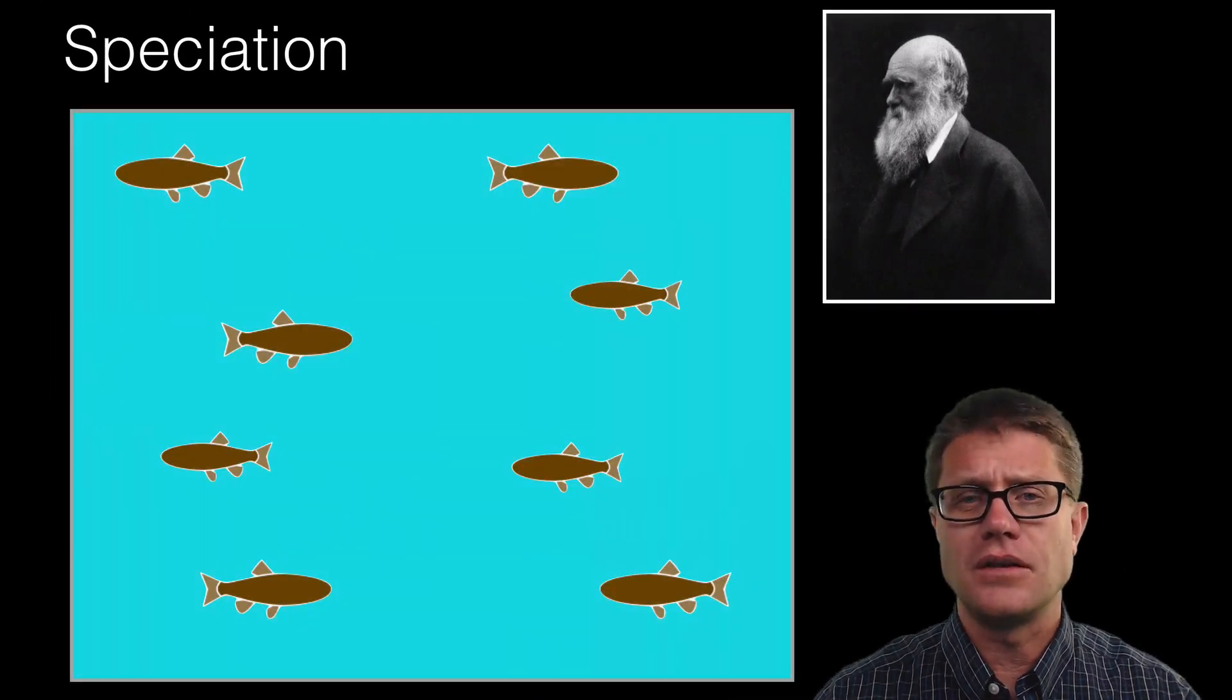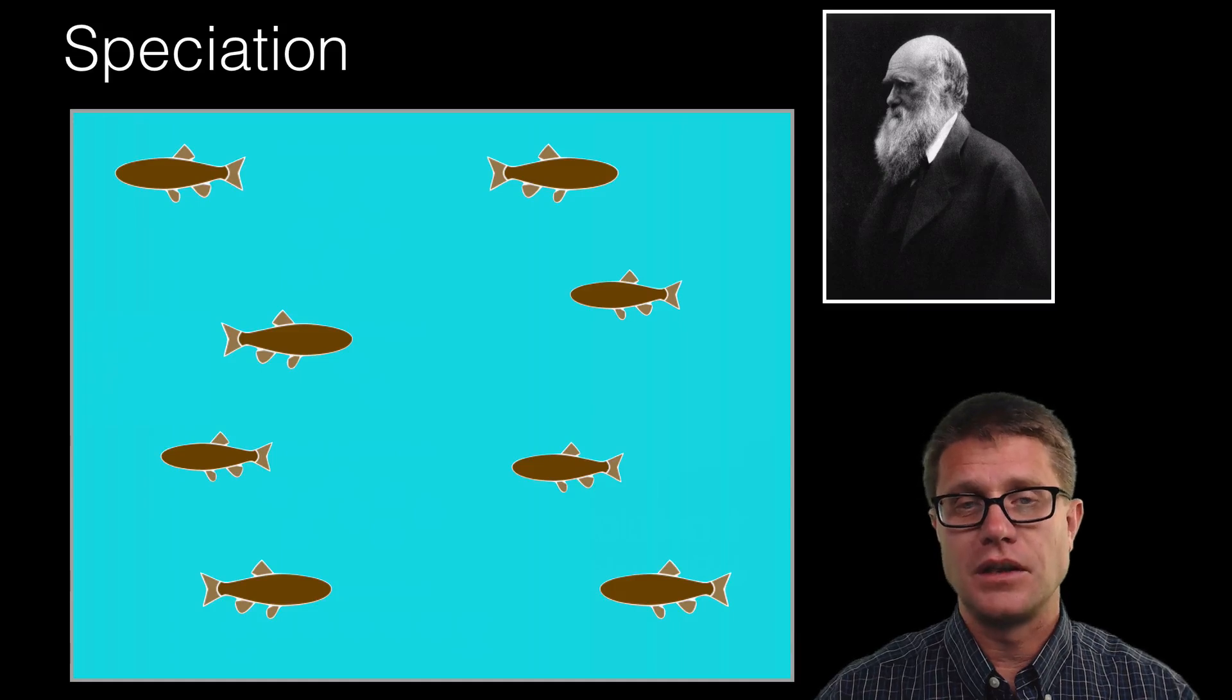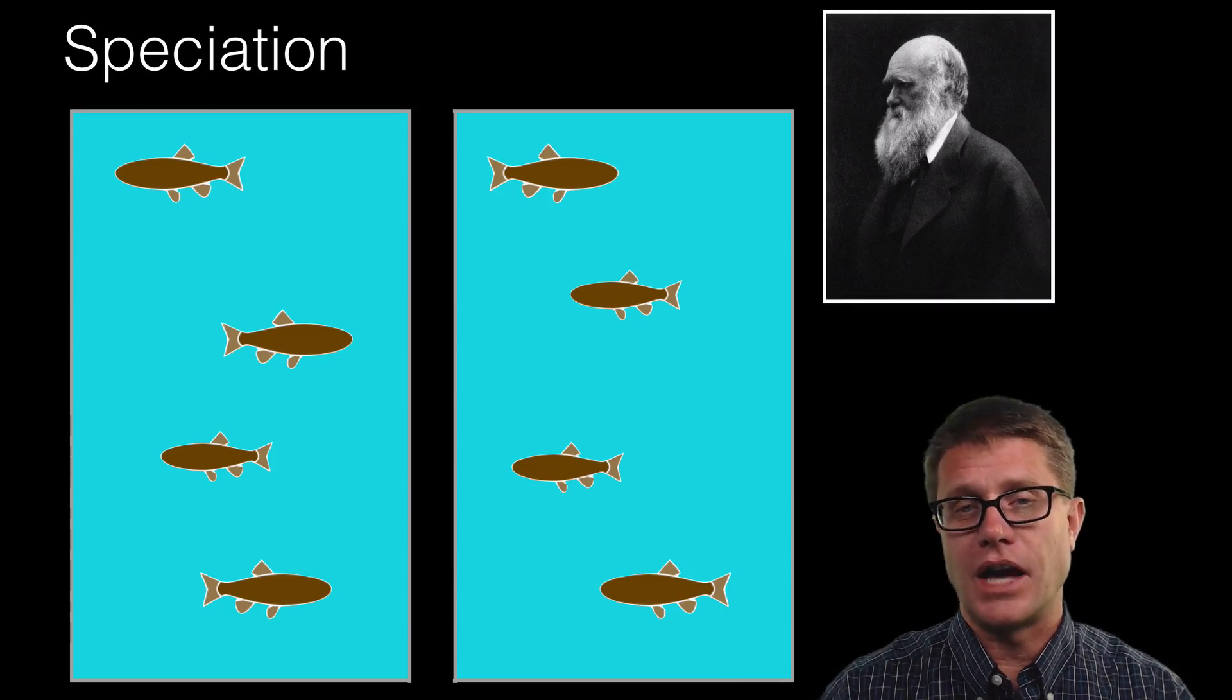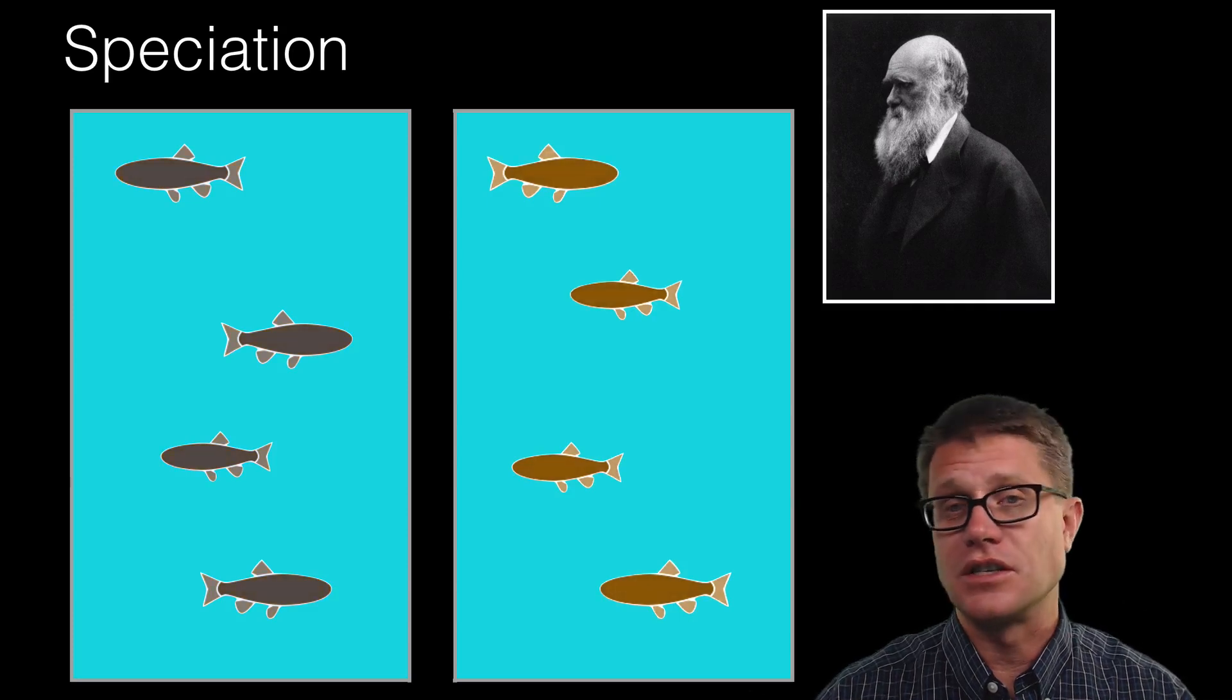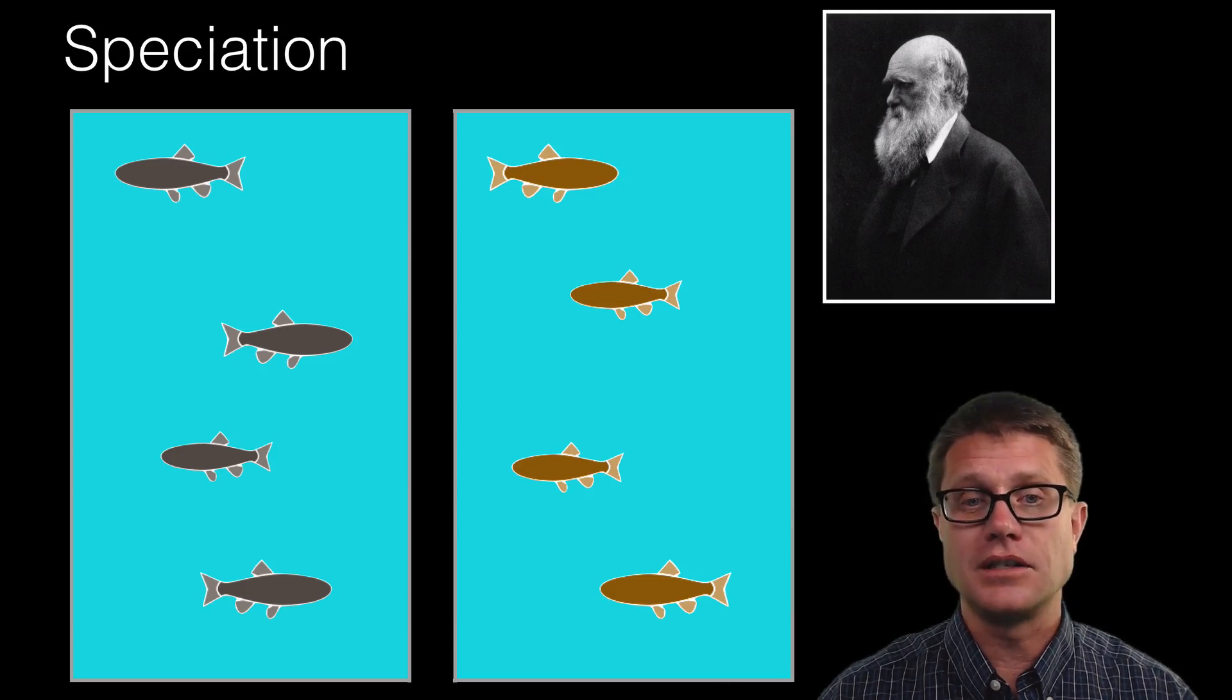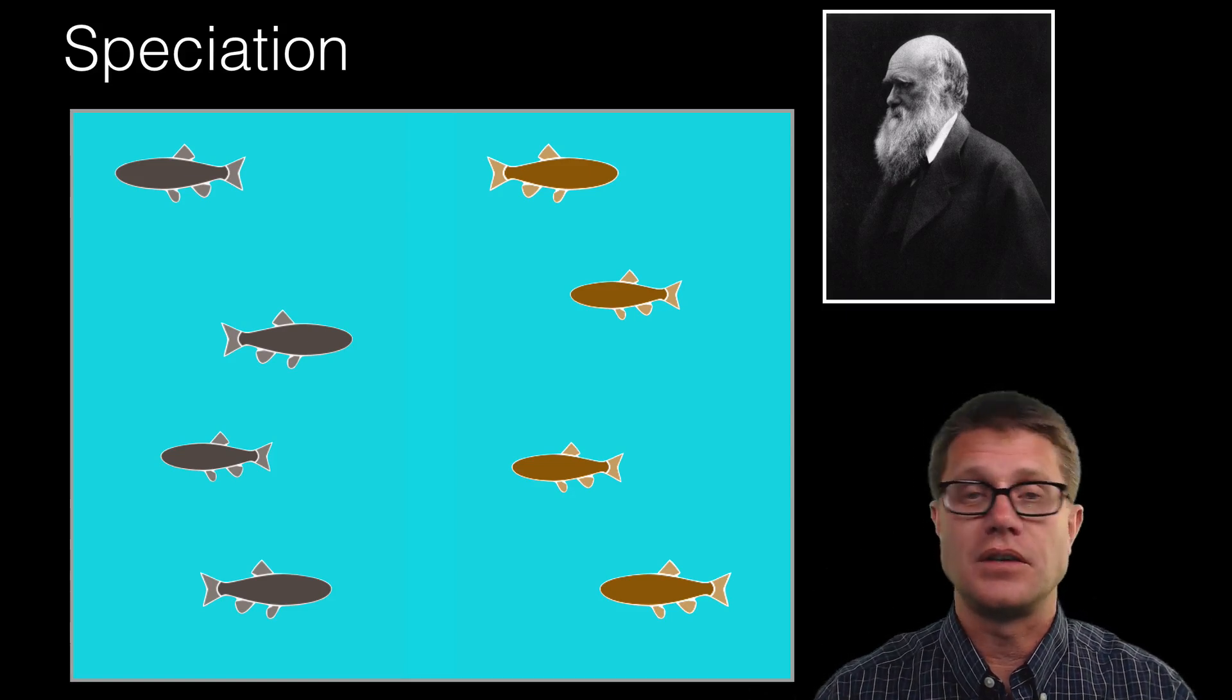But if we look at speciation, how does that occur? Imagine we have a group of fish that are in a pond and they are interbreeding with each other. We will call them one species. And they somehow get separated. Maybe it dries up and now we have two ponds. What happens over thousands and thousands of years is that they are each going to adapt to their environment. They are going to be perfectly adapted to that. So maybe there are changes in size, changes in coloration, changes in behavior. They are now becoming two species. How do we know that? Let us say that we put them back together again. If they quit interbreeding with each other, now we know that two species have evolved.